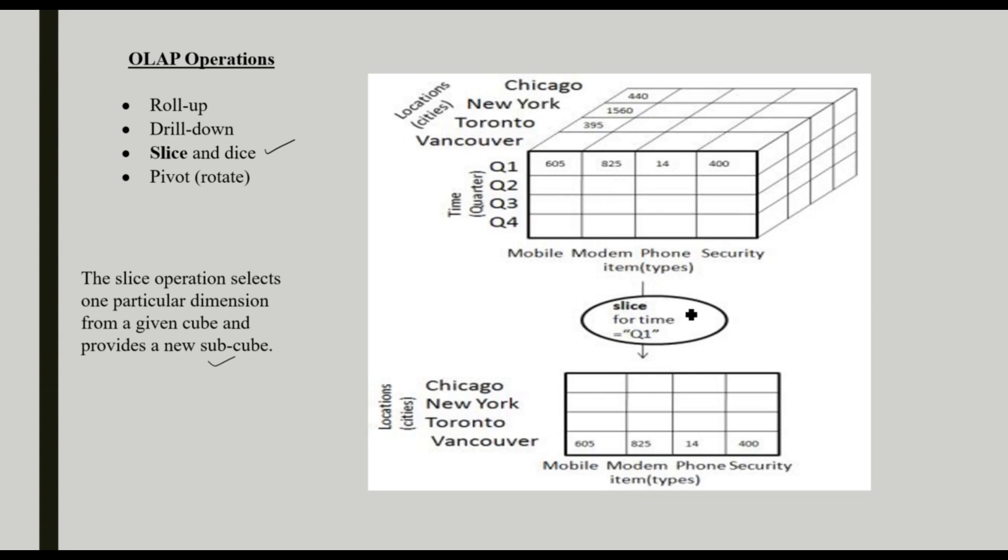In this example, see, this is a slice for time cube. Here, all the details are there according to location, time, and item. But we only want to concentrate on the sales of items in quarter 1. So we are slicing the quarter 1 data. That is the slice operation.